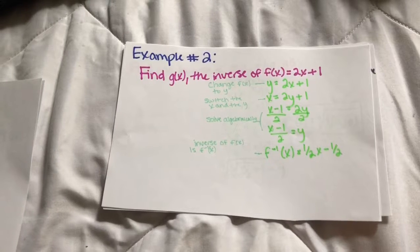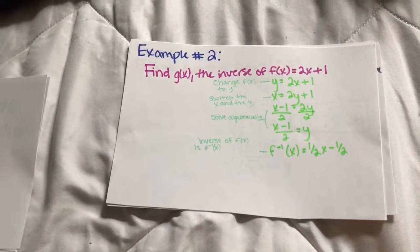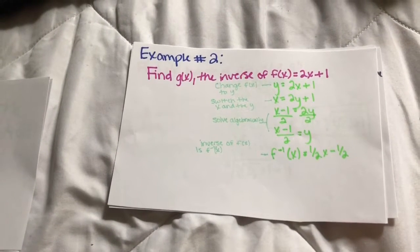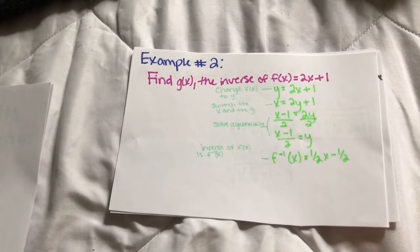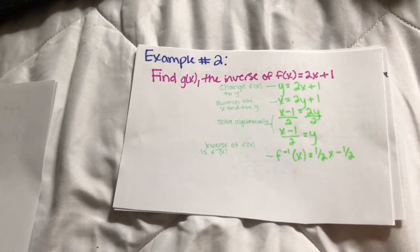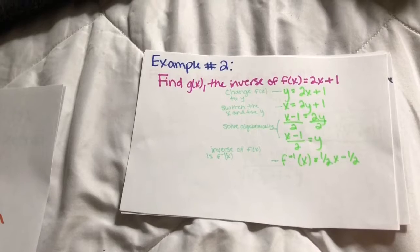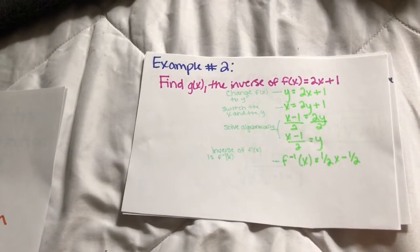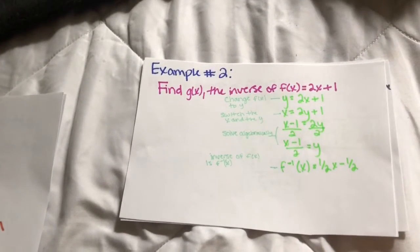Next, you just solve like you did in algebra so you have found the inverse. And you will end up with y equals (x - 1)/2. Now, the inverse should be f⁻¹(x) equals (1/2)x minus 1/2.